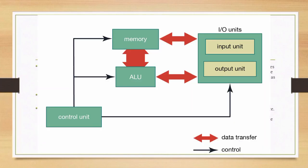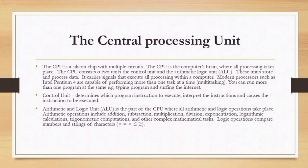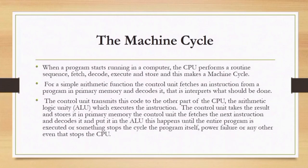We also have the Arithmetic Logic Unit (ALU), which is the part of the CPU where all arithmetic and logic operations take place. Arithmetic operations include addition, subtraction, multiplication, division, and exponentiation. Logic operations compare numbers and strings of characters, and we use comparison symbols to represent these operations.